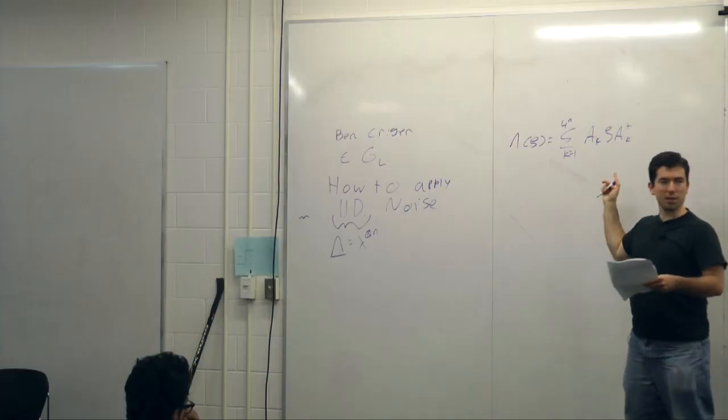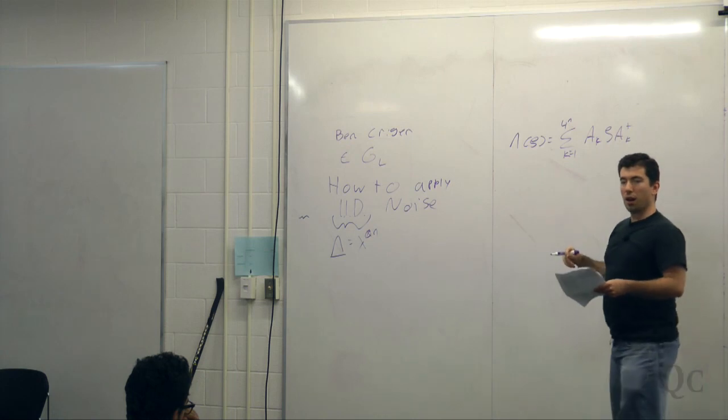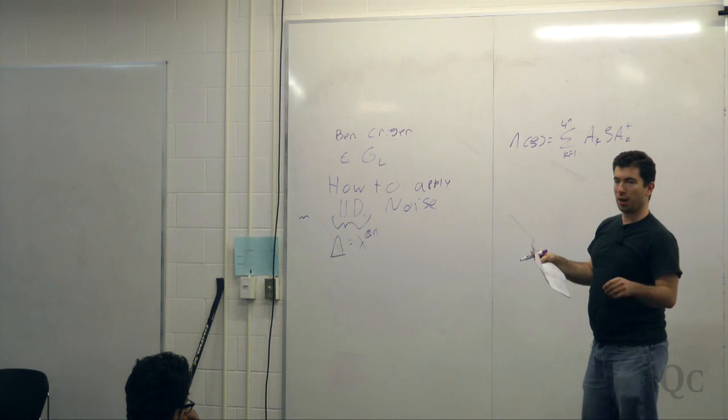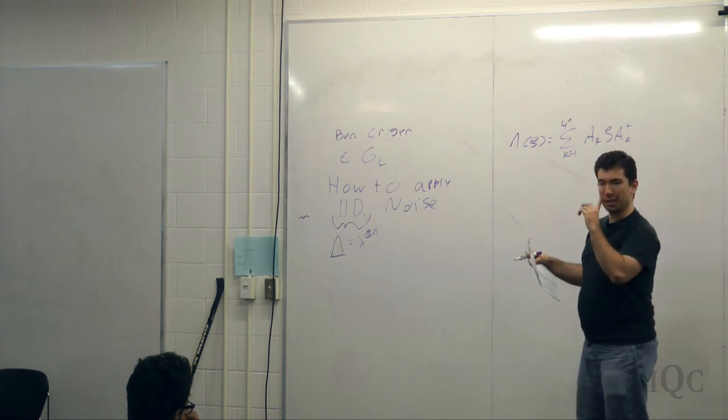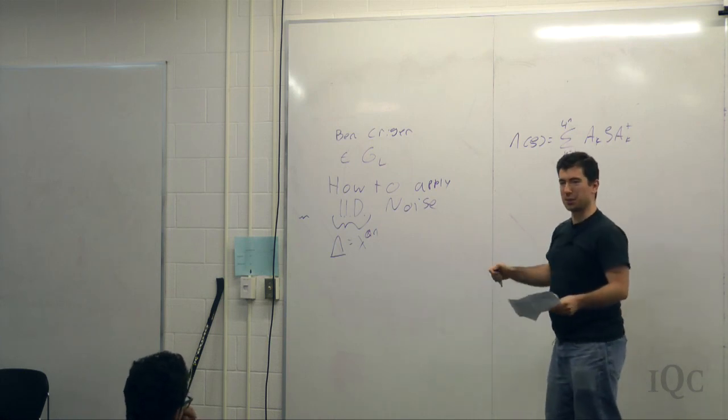Has anybody not seen this before? You have not seen this before. So a Kraus map is kind of a generalization. You have seen a Kraus map, actually. In the last talk, there are CPTP maps, but it was very recent, so I'll excuse you.